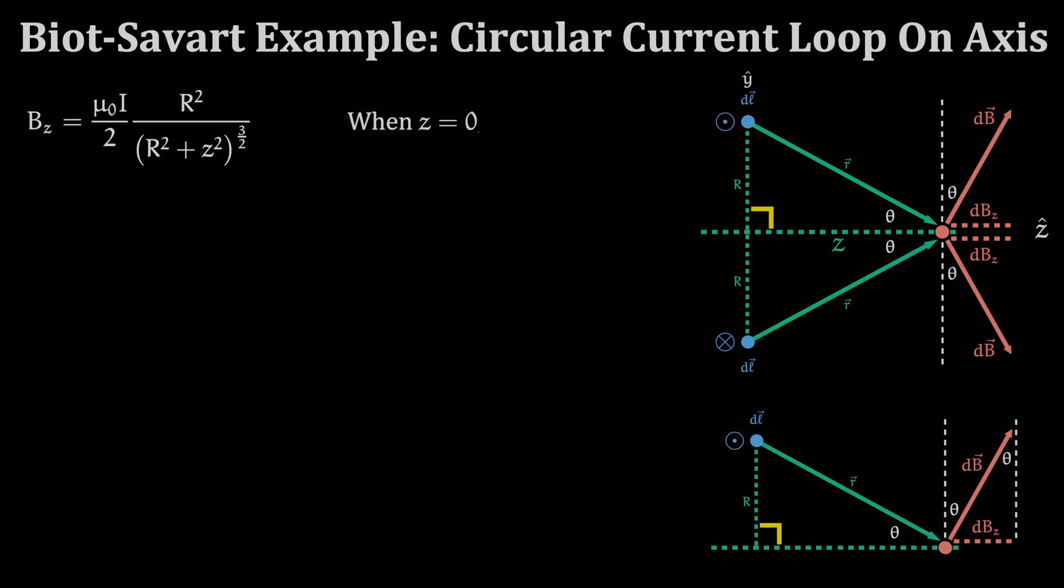In the denominator with z equals zero, we just have capital R squared to the 3 halves power, which gives us capital R cubed. Two powers of this will be cancelled by the capital R squared in the numerator, leaving us with this equation, which is exactly what we expected.